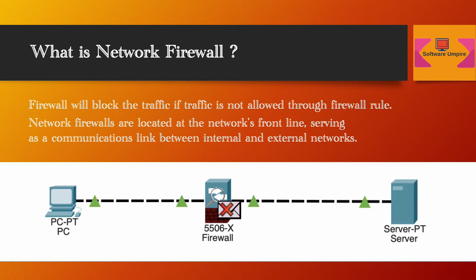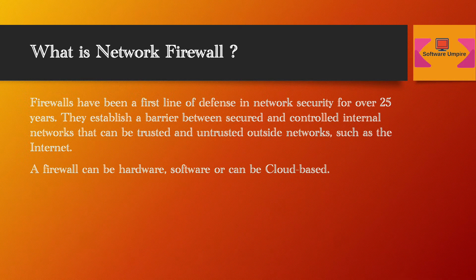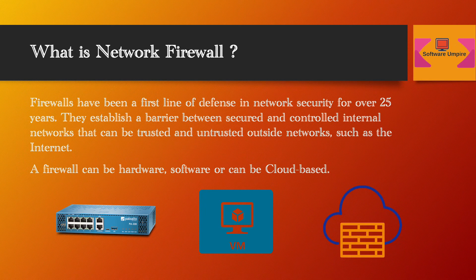Network firewalls are located at the network's front line, serving as a communications link between internal and external networks. Firewalls have been a first line of defense in network security for over 25 years. They establish a barrier between secured internal networks that can be trusted and untrusted outside networks, such as the internet. A firewall can be hardware, software, or cloud-based.